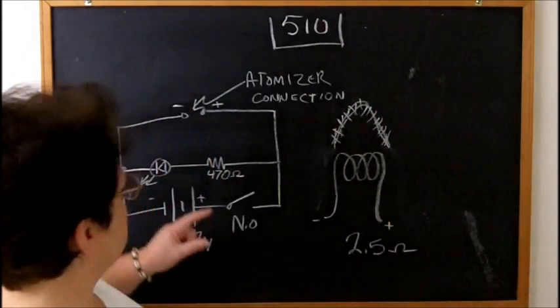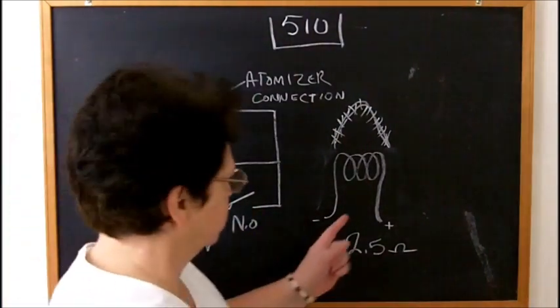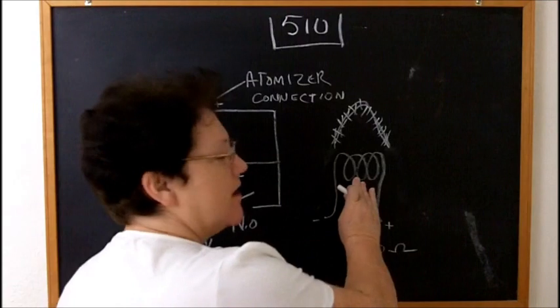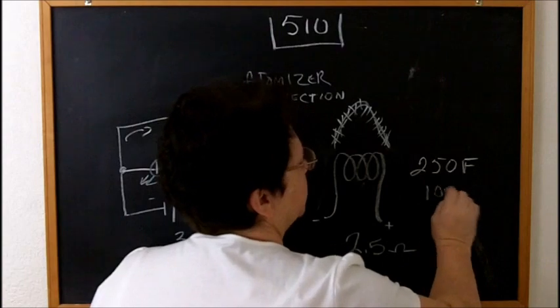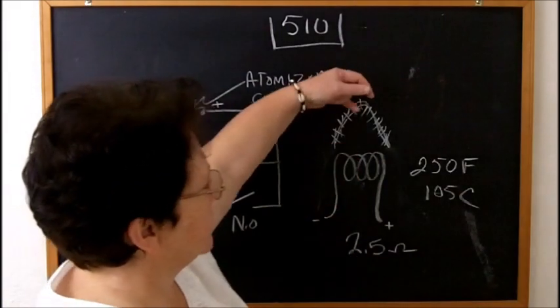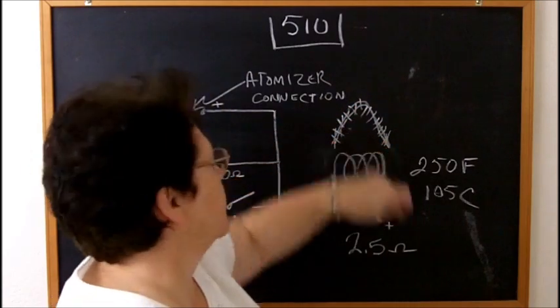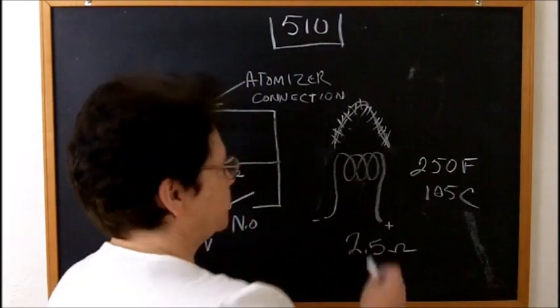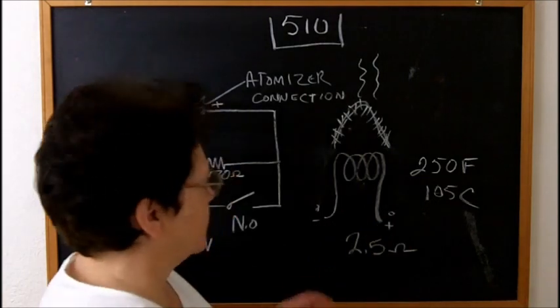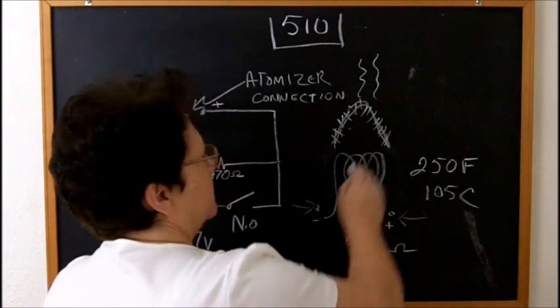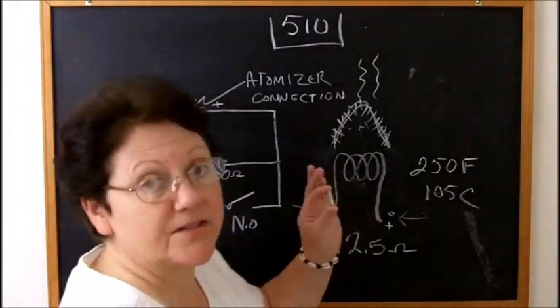And so when you push the button, the current flows up through the atomizer. This gets very hot pretty instantaneously. It gets to like 250 degrees Fahrenheit or about 105 degrees centigrade, so that the e-liquid that's oozed down onto this wire mesh instantly vaporizes. And that's where you get the vape. There's also typically two little holes down here so that the air flow, the air can flow in and up. So that's how these atomizers work.